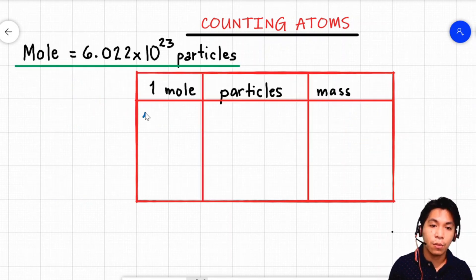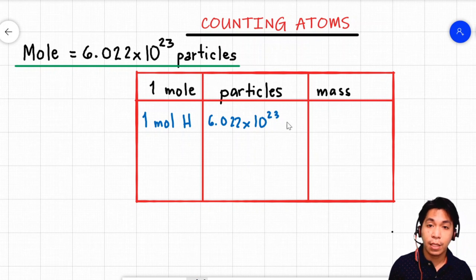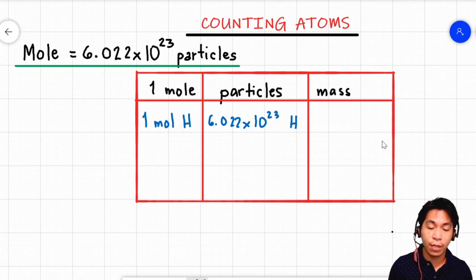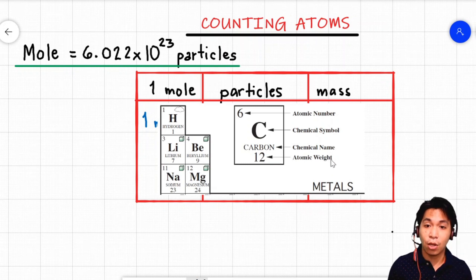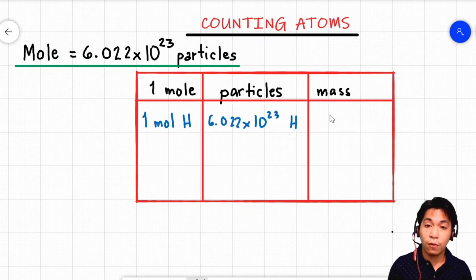If we have one mole of the element hydrogen, there are 6.022 times 10 to the 23rd particles of the element hydrogen. Now what about its mass? To identify the mass of one mole of hydrogen, you just refer to a periodic table of elements and look for its atomic weight, or sometimes called atomic mass. The atomic weight of hydrogen is equal to 1, so the mass of one mole of hydrogen is equal to 1 gram.